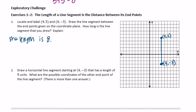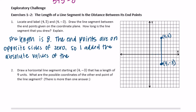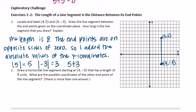We can use the same explanation as above. The endpoints are on opposite sides of 0, so I added the absolute values of the y-coordinates. The absolute value of 5 is 5, the absolute value of negative 3 is 3, and 5 plus 3 is equal to 8.